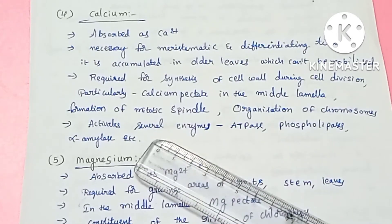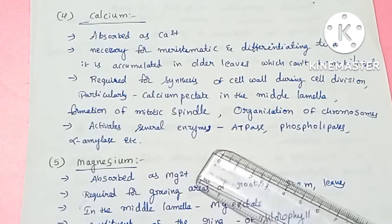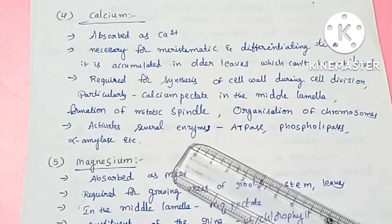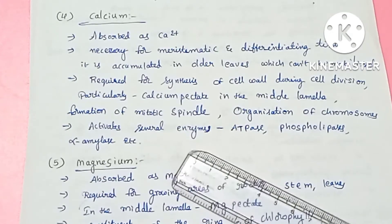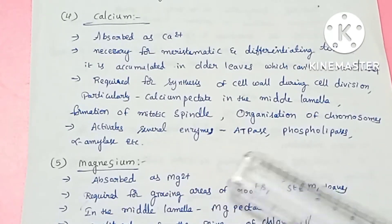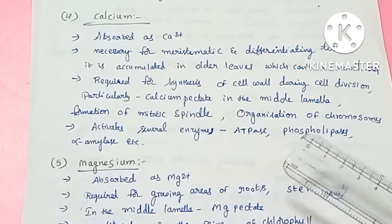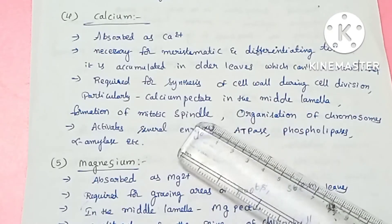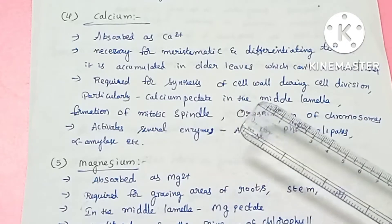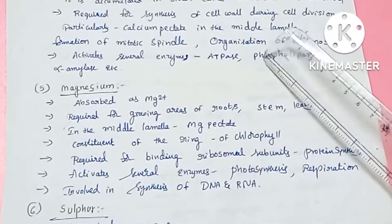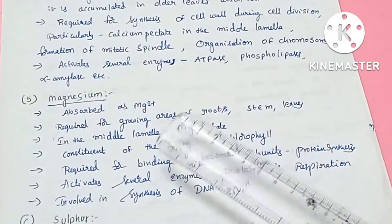Calcium also activates certain enzymes. Magnesium is absorbed in the form of magnesium ions.